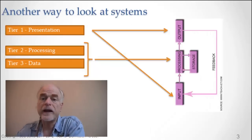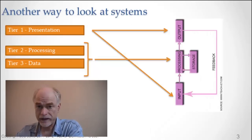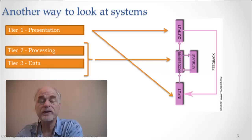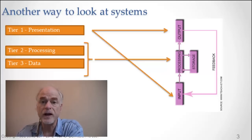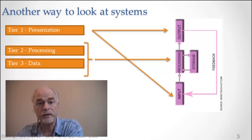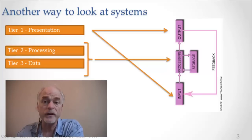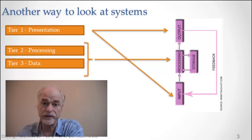Throughout most of this class, we've looked at technology as being guided by this three-tier system: the presentation tier, the processing tier, and the data tier. The presentation tier is closest to the user, providing the user experience. The processing tier has the core functionality of the application or system. And the data tier is the long-term storage of the information of the system.